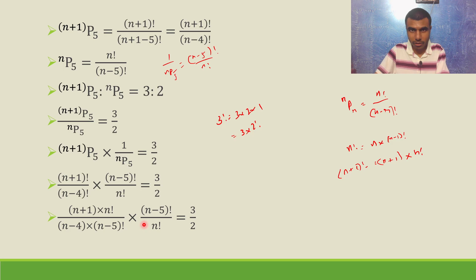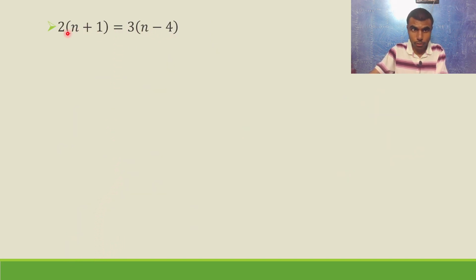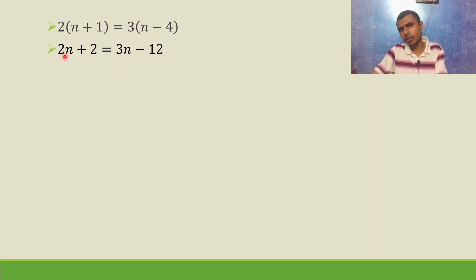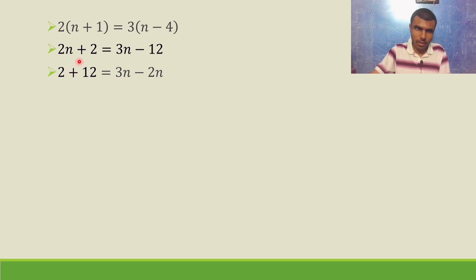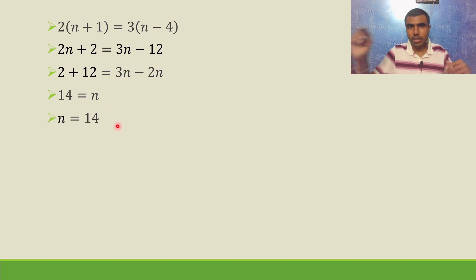Now n minus 5 factorial and n factorial cancel out. What remains is n+1 by n minus 4 equal to 3 by 2. Cross multiply: 2 times n+1 equals 3 times n minus 4. So 2n plus 2 equals 3n minus 12. Rearranging: 2 plus 12 equals 3n minus 2n, giving 14 equals n. So n equals 14. Thank you.